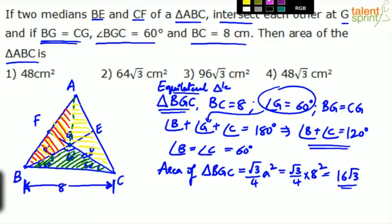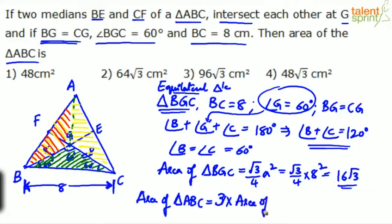So now we can conclude that area of triangle ABC equals three times the area of triangle BGC. Because all three are equal. So if this is 16 root 3, these two will also be 16 root 3 each. So area of the complete triangle will be three times 16 root 3. Just simplify it - 3 into 16 root 3, which comes out to be 48 root 3.